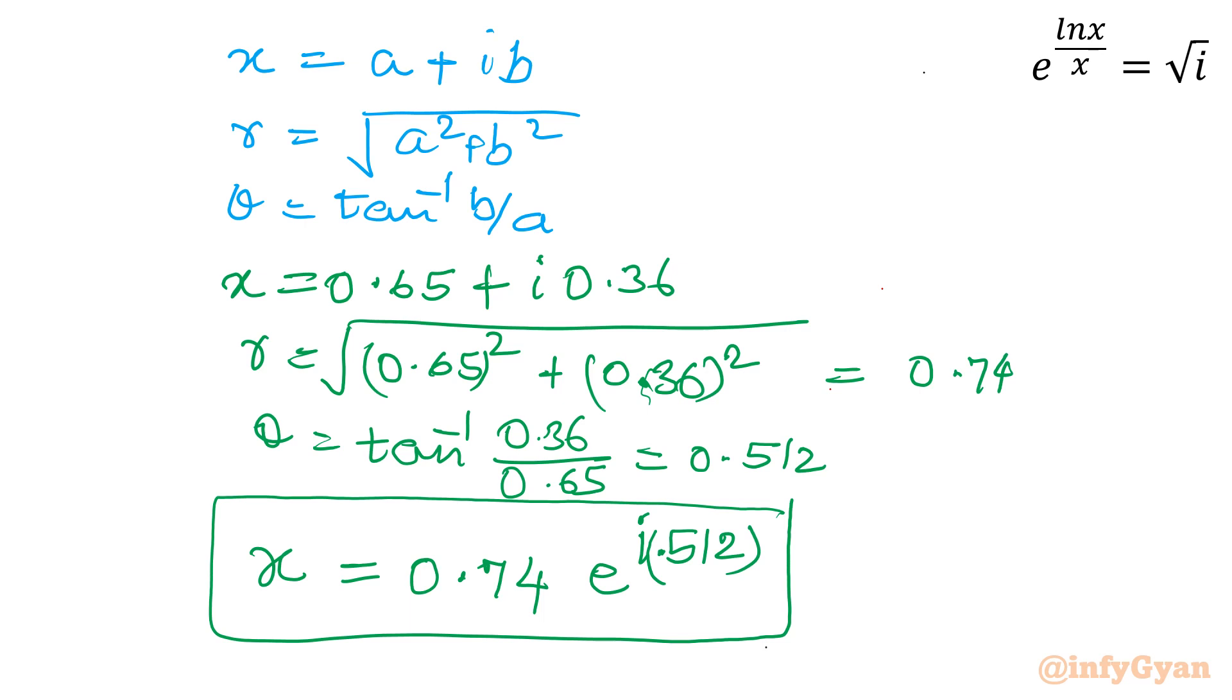We can write the general solution also. There will be infinitely many solutions. So by replacing theta with theta plus 2k pi, k belongs to integer. So this is only one solution.